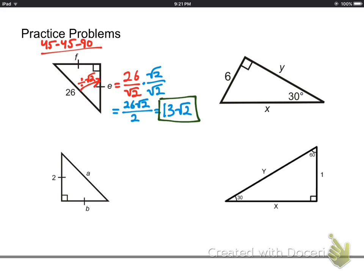You simplify it and you get 13 root two, which is actually a lot prettier than 26 divided by the square root of two. Now, the other nice thing about the 45-45-90 triangle is that those two legs are the same. So we get that F is also 13 root two.